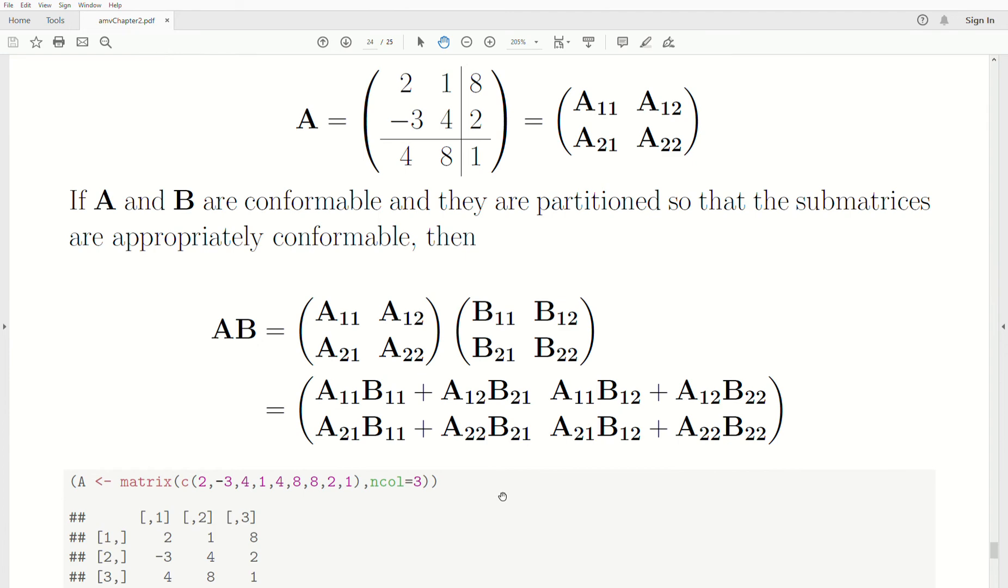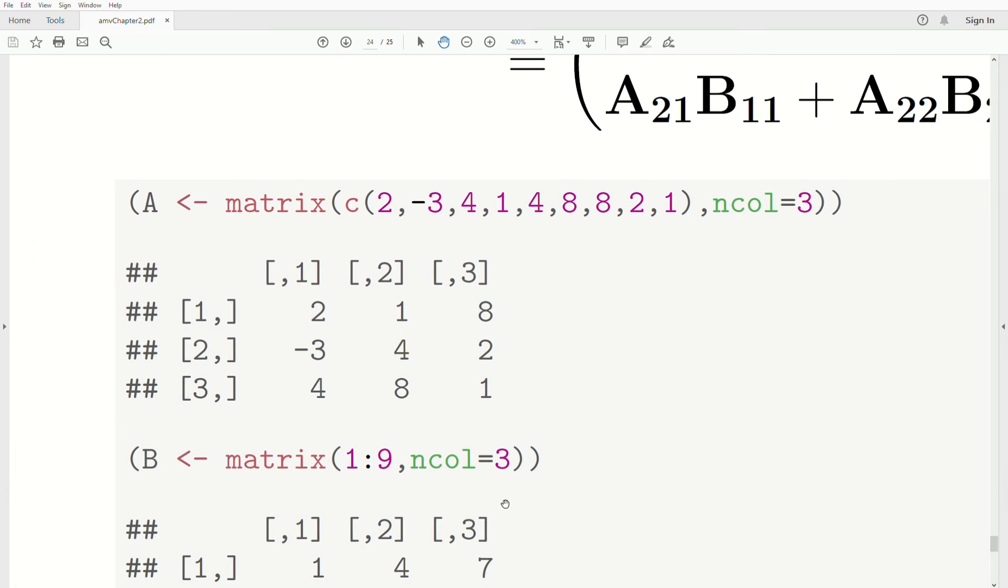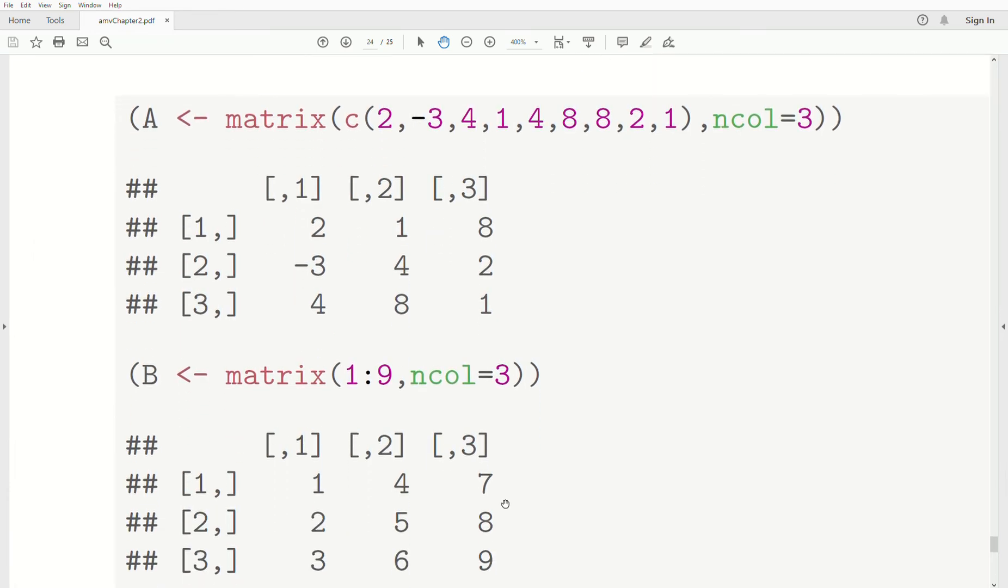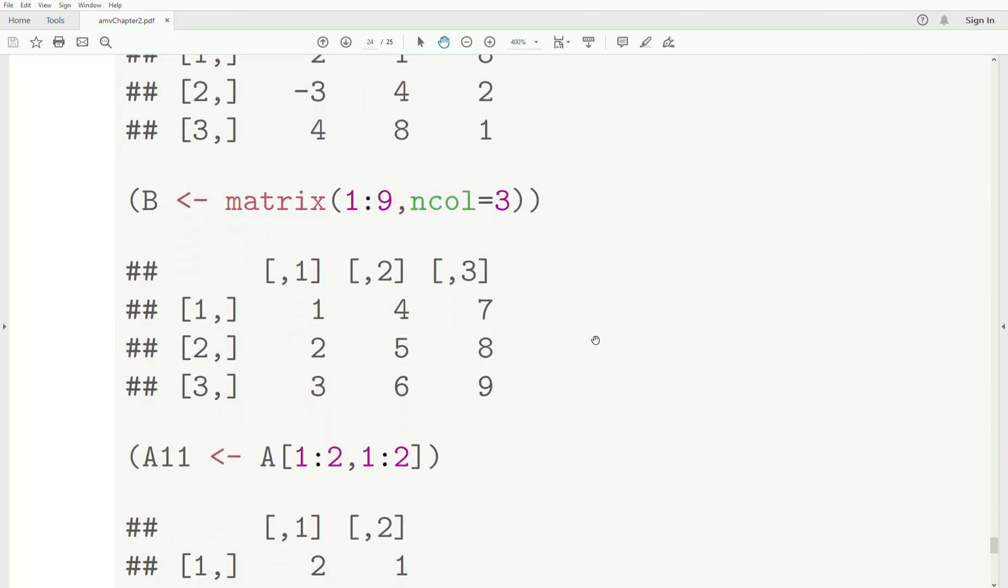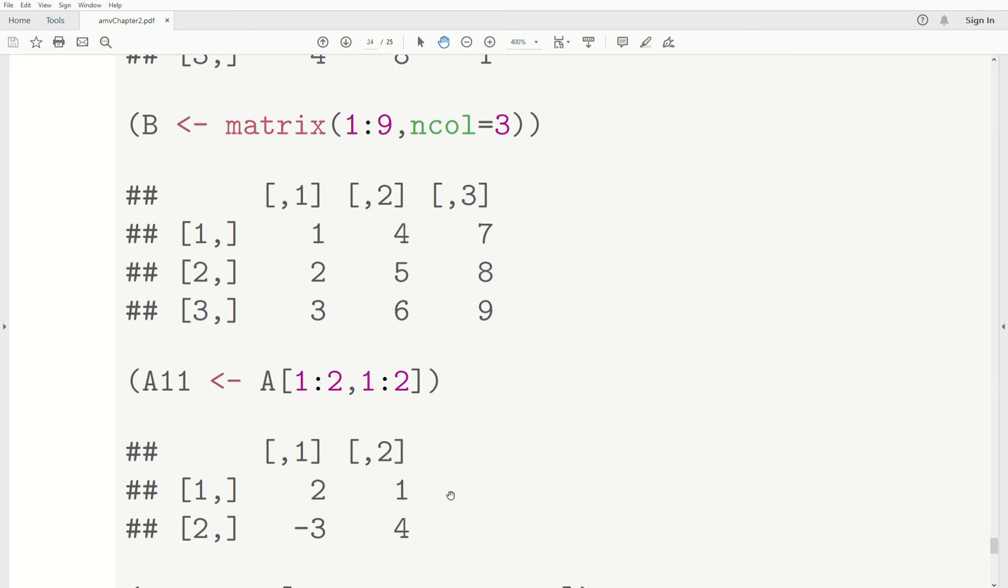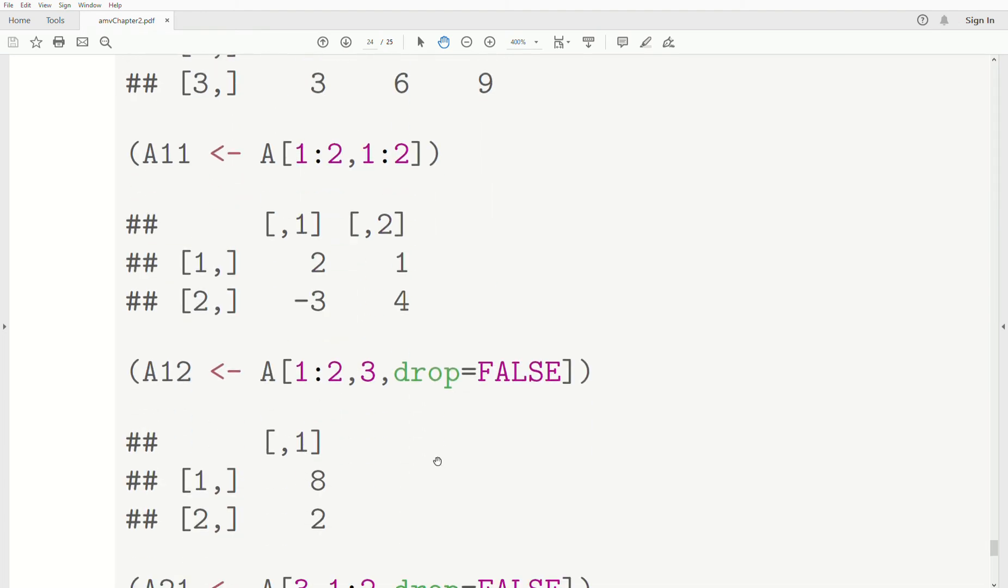Now let's do this in R. And then we'll call it quits for this video. So we have two matrices, A and B. And now we need to partition them into submatrices. So we need to grab different pieces of this. And this is how you do it in R. So we take matrix A, rows 1 and 2, columns 1 and 2, to get this submatrix, call it A11. Now notice 2, 1, minus 3, 4. We just grab that and stored it in A1.